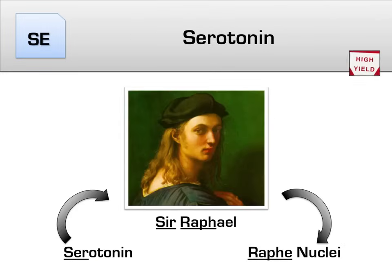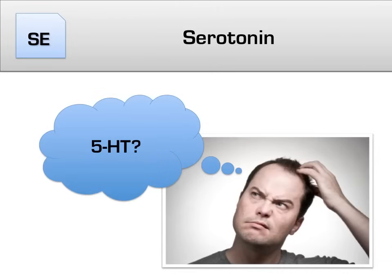One bit of trivia that frequently gets tested is the fact that serotonin comes from the raphae nuclei in the brain. To connect serotonin to the raphae nuclei, think of this painting illustrating Ser-Raphael. Also note that serotonin is also known as 5-hydroxytryptamine, often abbreviated as 5-HT. So don't be confused if you see references to 5-HT — just substitute the word serotonin and you'll be good to go.